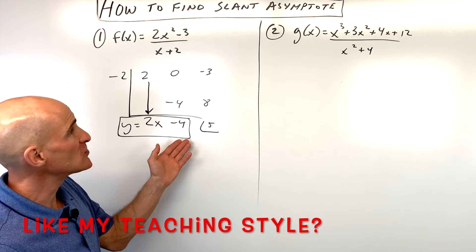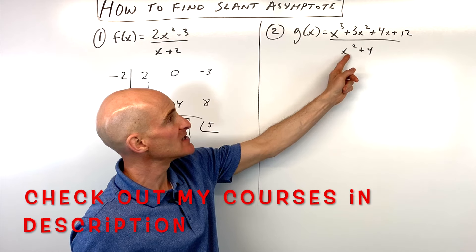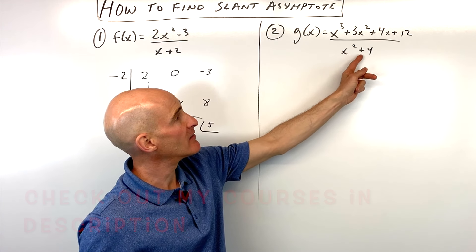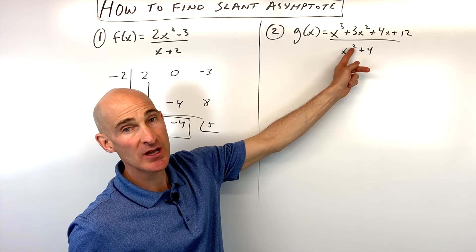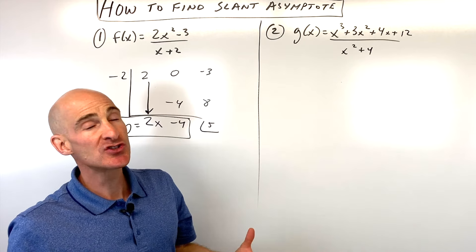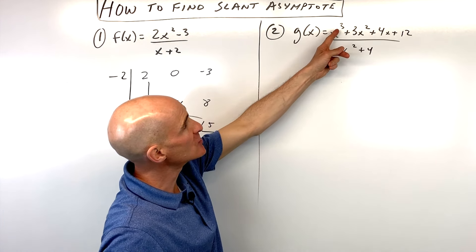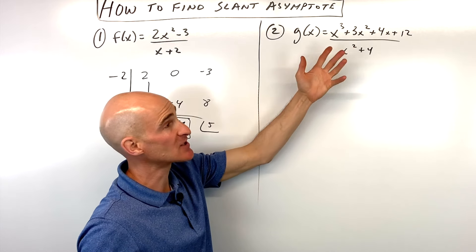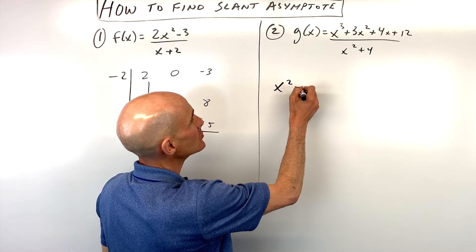Now, sometimes you can't use this method, like in example number two, where this is a quadratic in the denominator here, so this is the second degree. We're going to have to do long division. So let me show you that one. Again, notice the degree in the numerator is x cubed. This is one degree less x squared. That's how we know we have a slant asymptote.